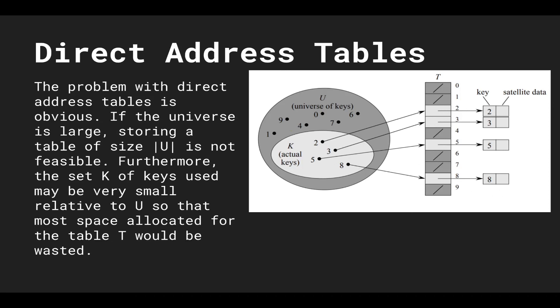But the problem with direct address tables is pretty obvious. If the universe of keys is large then we have to store the table the same size of the universe. So if universe is large then our table is large as well. On top of that the set of keys actually used from the universe may be small relative to the entire size of the universe. So most space in the table t that's allocated would actually be wasted.